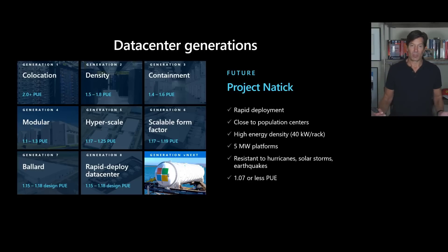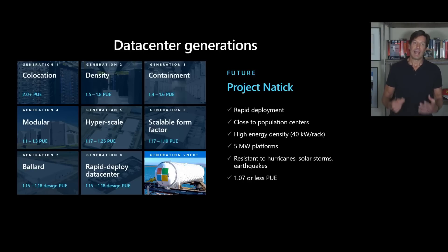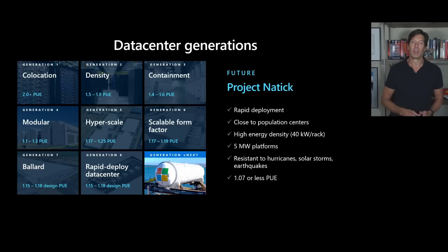First, the majority of the world's population centers are near a coastline, meaning we can deploy underwater data centers and serve just about all of the world very efficiently. Because they're on the ocean floor, they take advantage of ambient water temperature to cool, driving PUEs to levels we couldn't achieve in land-based data centers. They're also resistant to hurricanes, solar storms, and earthquakes. We can deploy them extremely quickly — you're looking at Natick V2, where we took 12 racks of Azure servers, put them in the cylinder, and dropped them a kilometer off the coast of Scotland in about 100 feet of water. From the time the cylinder was made to the time servers were on the ocean floor powered on and serving Microsoft workloads was just 30 days.